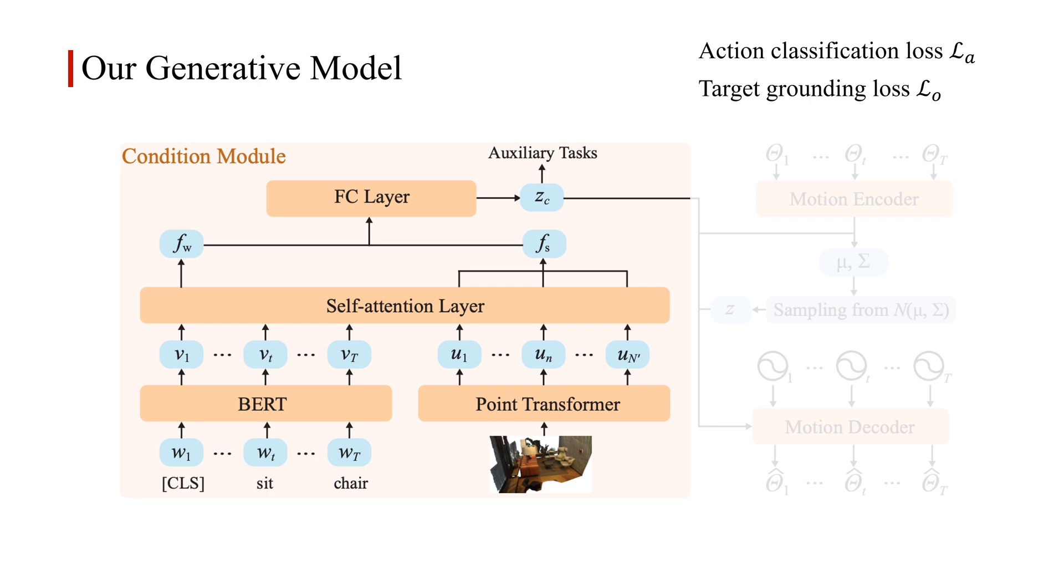Notably, the learning of conditional latent embedding is crucial to our generative model as it represents compound information of the action, the interacting object, and the 3D scene context from two different modalities. We thus introduce two auxiliary tasks for classifying the action type for the motion and locating the interacting target object.